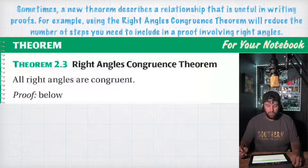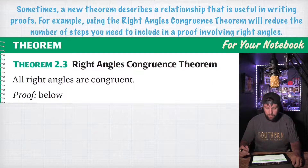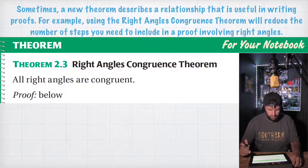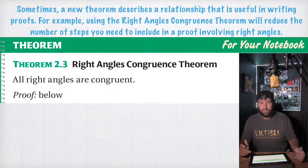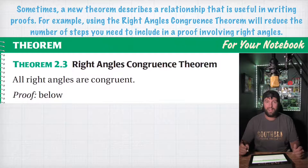Sometimes a new theorem describes a relationship that is useful in writing proofs. For example, using a right angle congruence theorem will reduce the number of steps you need to include in a proof involving right angles. So theorem 2.3, the right angles congruence theorem, says that all right angles are congruent.